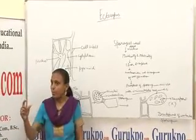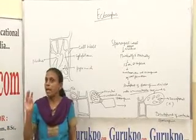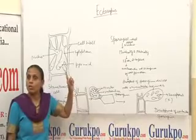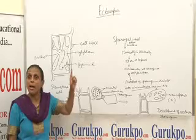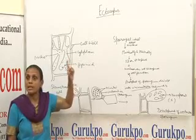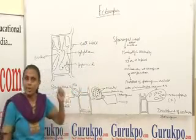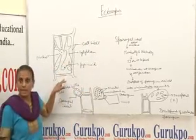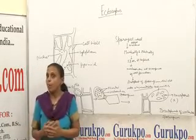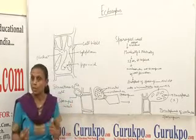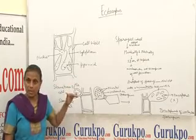Regarding the pigments found in Ectocarpus: the pigments are chlorophyll A, chlorophyll C, and xanthophyll. Because of the presence of xanthophyll pigment in a large amount, this alga — Ectocarpus — appears brownish in color and it is placed in the class Phaeophyceae. The cell also contains cytoplasm, and inside the cytoplasm there are vacuoles containing polyphenol compounds; these vacuoles having the polyphenol compounds are called Physodes.